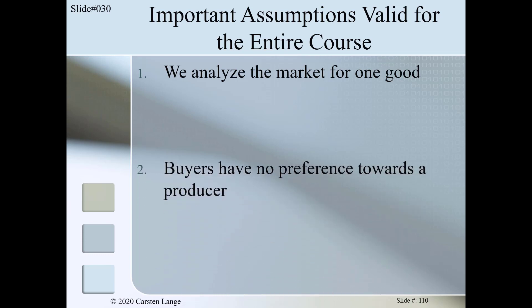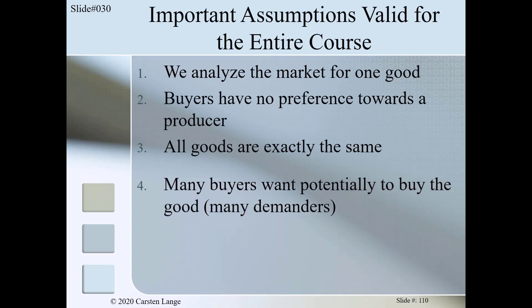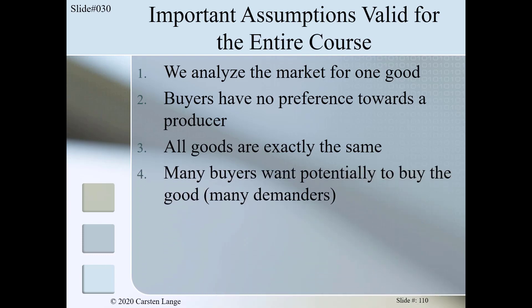The second assumption states that buyers have no preference towards a producer. For example, Q-plus wheat is valued by consumers in the same way no matter if it is produced by farmer C in California or by farmer T in Texas. The third assumption is similar to the second. While we assumed in the second that all producers are the same, we assume in the third assumption that all goods in the market are exactly the same.